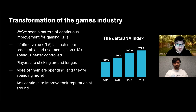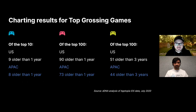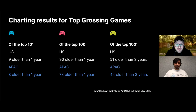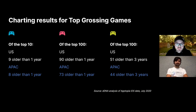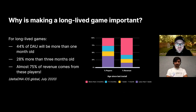You don't need us to tell you that games have been improving over the years. If we take the top grossing game charts — looking at Apptopia, iOS, US, and APAC — the majority of the charts consist of games older than one year. If you just look at the top 100, half are older than three years. So it's very clear that long-lived games are dominating. The big question here is: why is making long-lived games important?